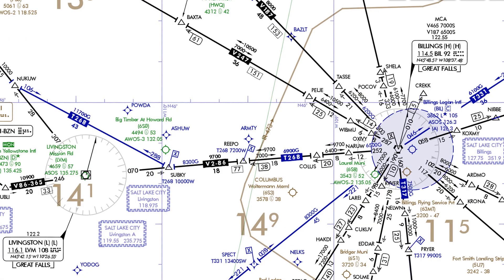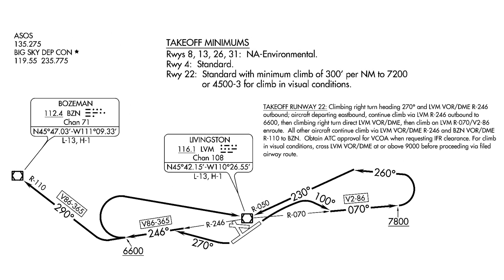Here we'll plan an IFR flight in Montana between Livingston and Billings. Each airport has an on-field VOR, and we can navigate between them along Victor 2. Livingston has an ODP thanks to the high terrain in the area — it's a graphically depicted one, the Livingston 2. We'll use runway 22 for this departure, which should be no problem if we're able to make the required climb gradient.